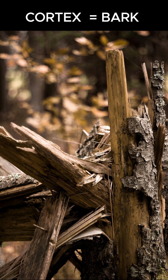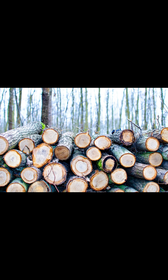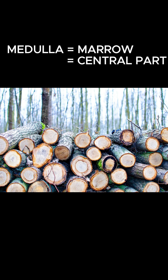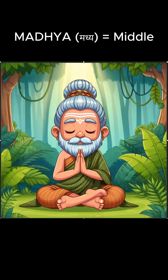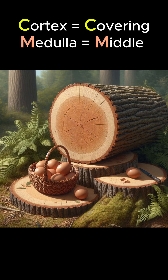In Latin, cortex literally means bark — the outer layer of a tree. The word medulla comes straight from Latin, where it meant marrow of bone or central part of plants. Linguists trace it back to the Sanskrit root madhya, which means middle. So the cortex is essentially the outer layer protecting the medulla, the innermost essence of something.